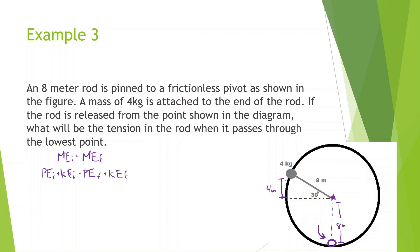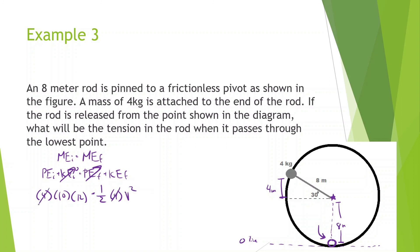Potential energy initial plus kinetic energy initial equals potential energy final plus kinetic energy final. At the very beginning it starts from rest, so kinetic energy is zero. I put the zero line at the lowest point. The potential energy is mass 4 times gravity 10 times height — the height is 8 plus 4, which is 12. No kinetic energy initially, and no potential energy at the end. Kinetic energy final is one-half times 4 times V squared. The 4's cancel, and we get: 10 times 12 times 2, square root — velocity equals 15.49 meters per second.